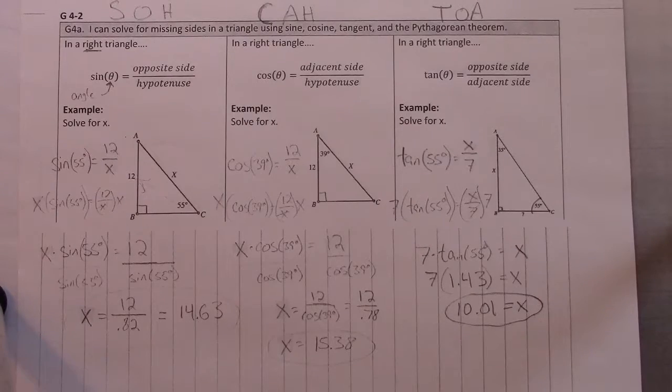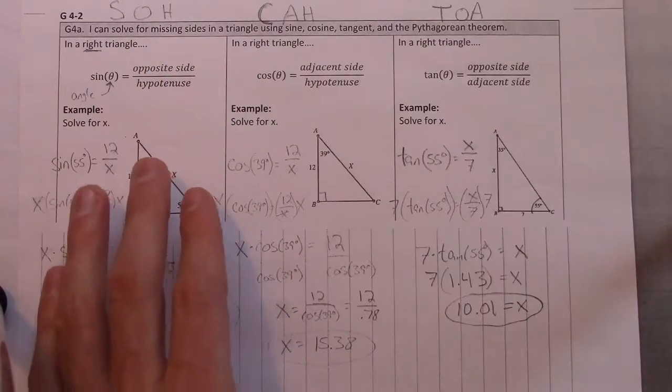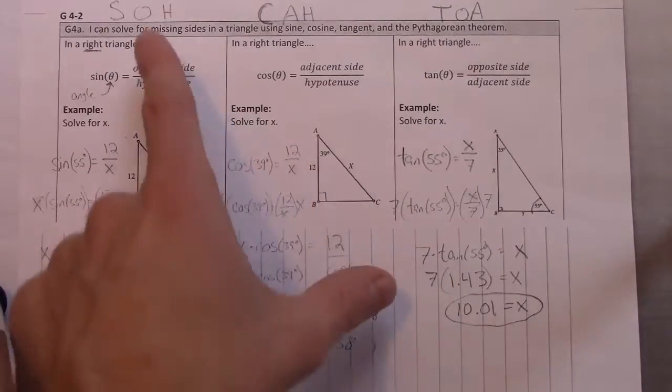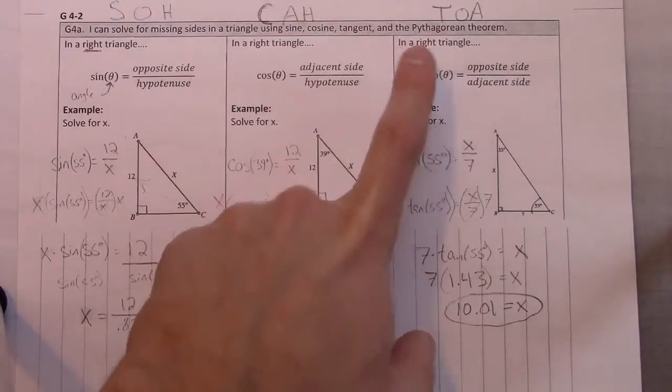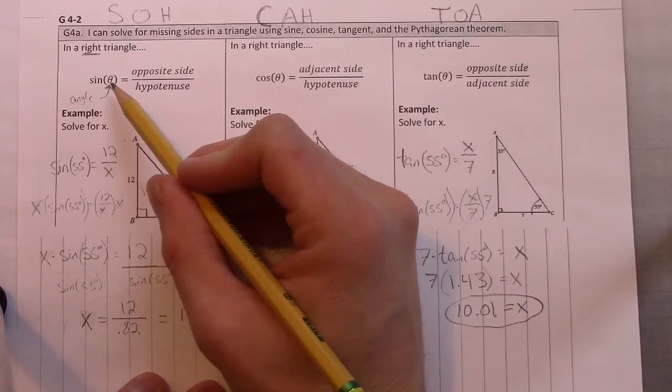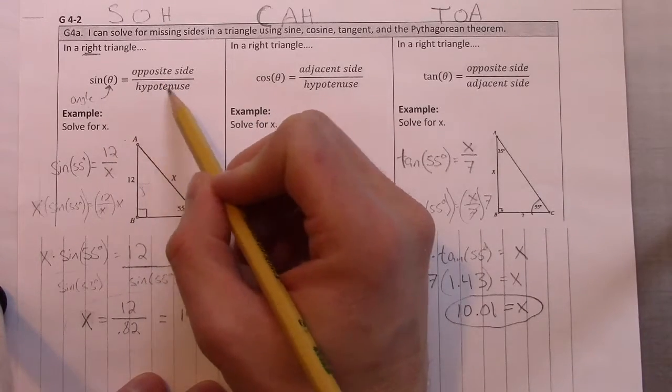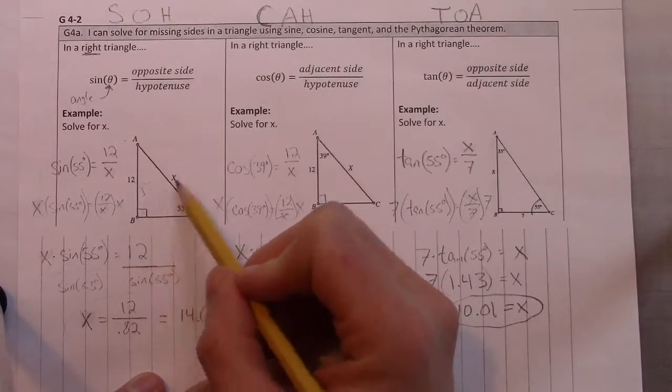All right, so in geometry class we learned something about trigonometry, which was SOHCAHTOA, and that was the way that we remembered that the sine of an angle is equal to the ratio of the opposite side over the hypotenuse. Remember, the hypotenuse is always opposite the 90 degree angle, right?